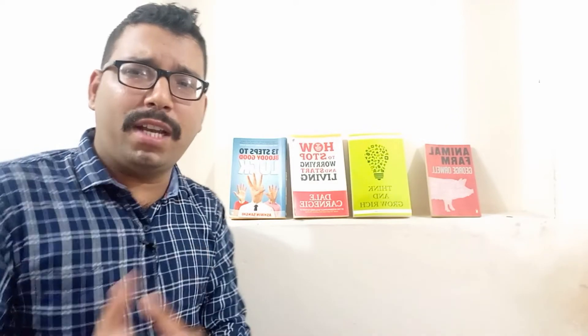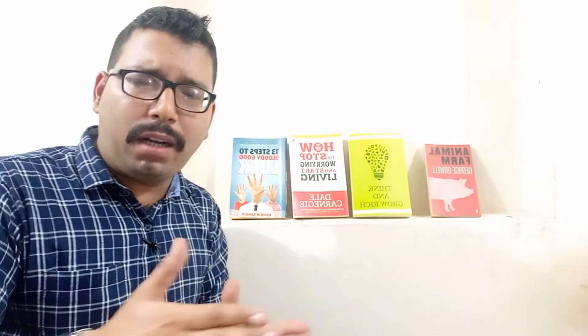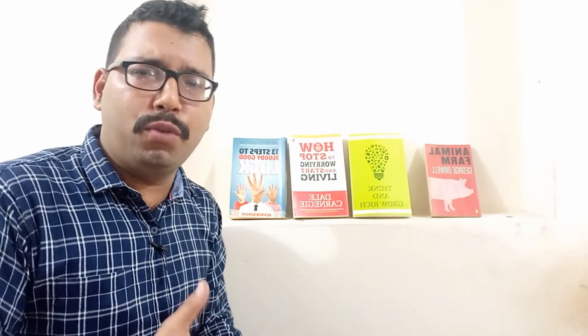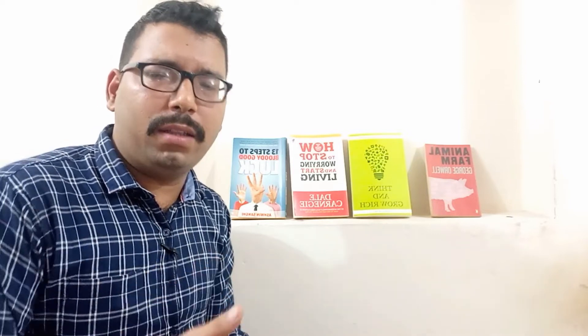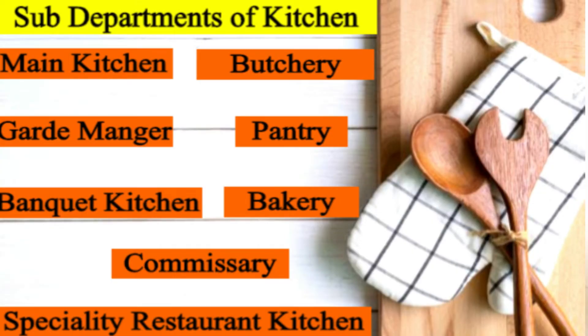Finally, we have the commissary section. The commissary section handles the vegetable store — vegetables come from the main store and are distributed to different sections according to order and issue requirements. So, to summarize, the sub-departments under the food production department are: main kitchen, pantry, banquet kitchen, specialty restaurant kitchen, garde manger, bakery, butchery, and commissary.